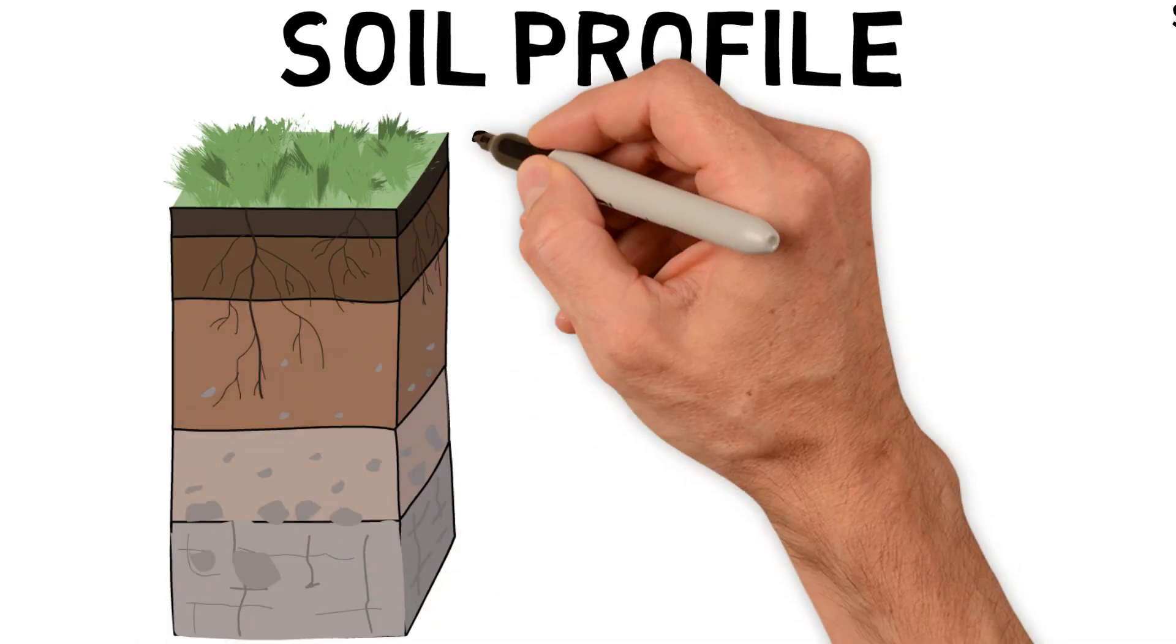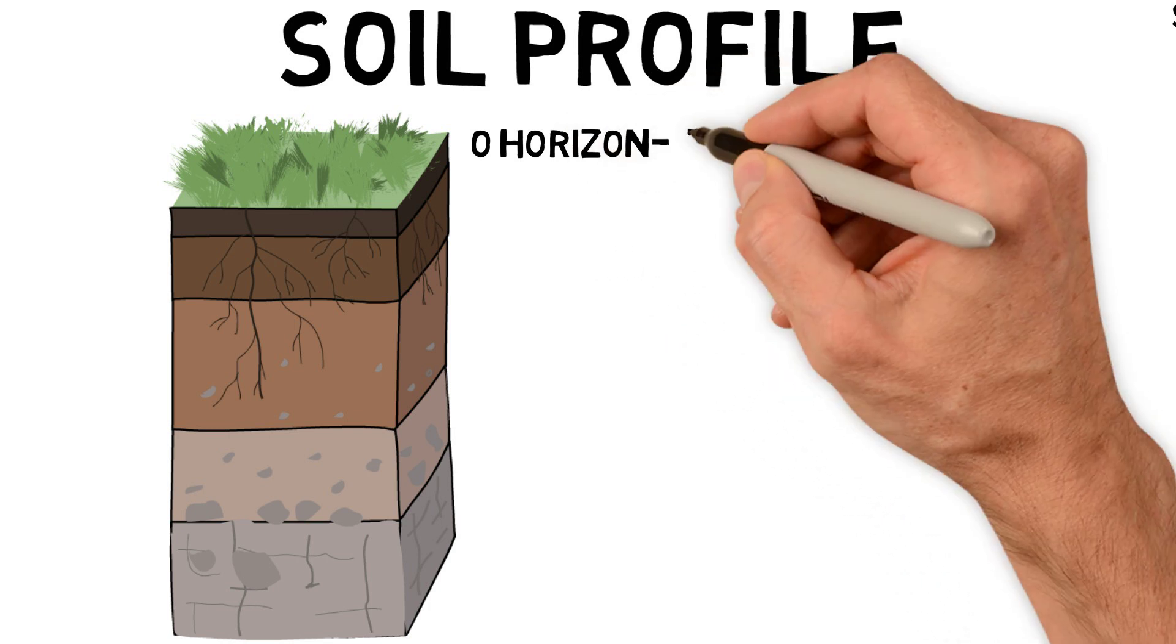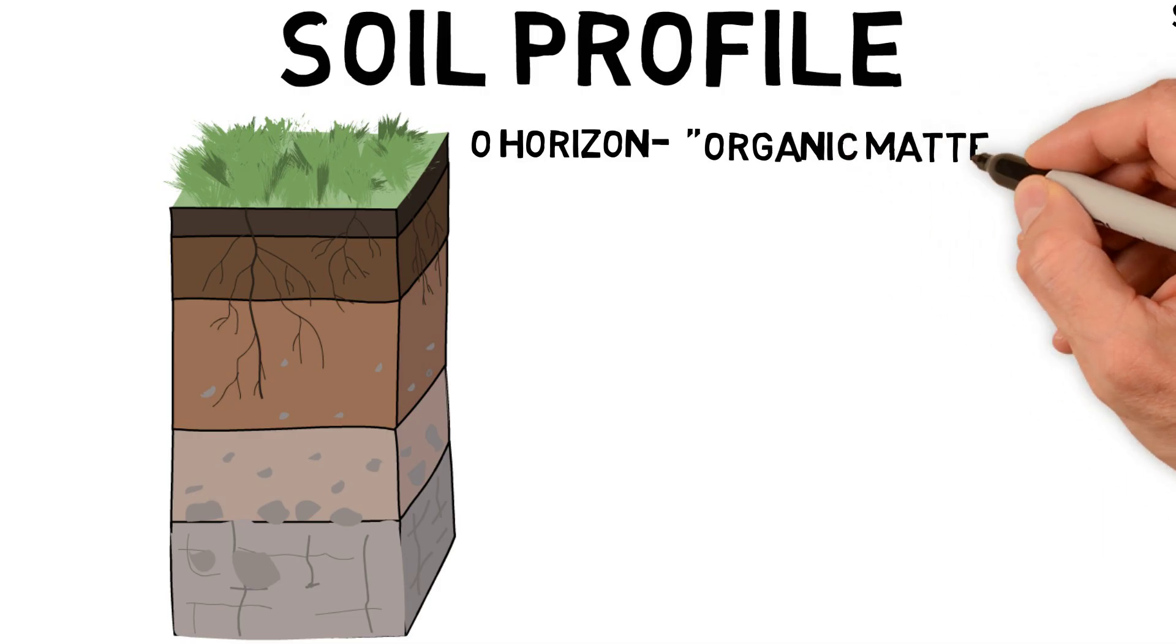The very first layer or horizon is the O horizon. This usually isn't considered soil yet, and in fact, the best way to think of this horizon is as organic matter. It's typically composed of decaying plant material like leaves, roots, and sticks, and it's typically characterized by a dark color.